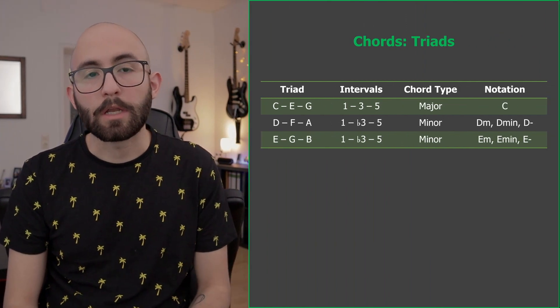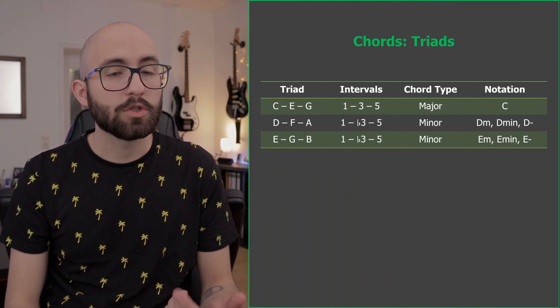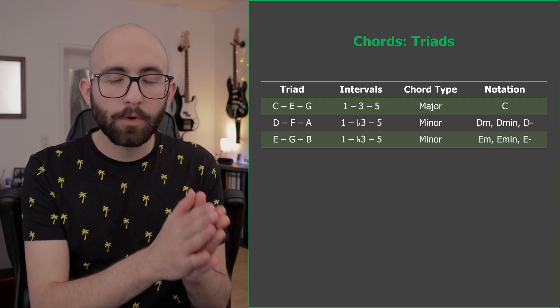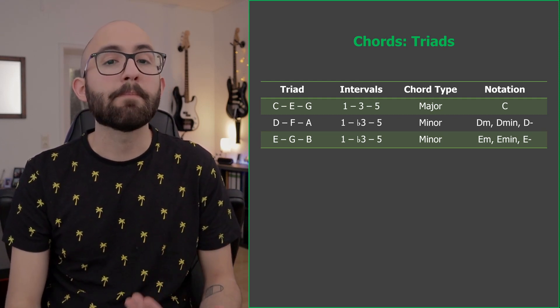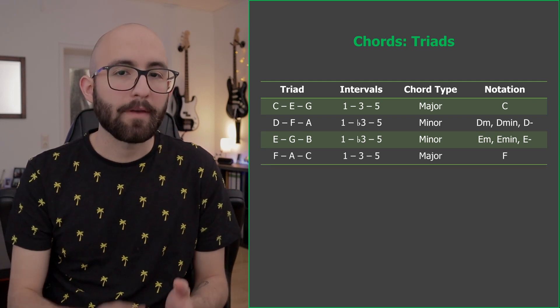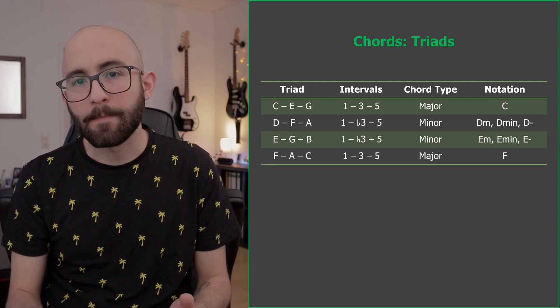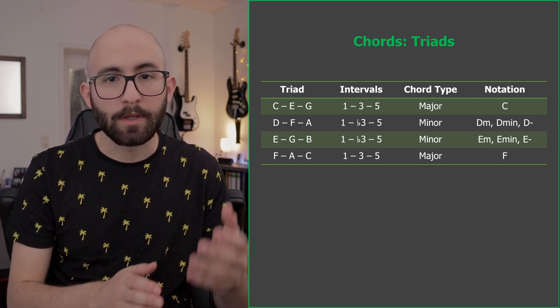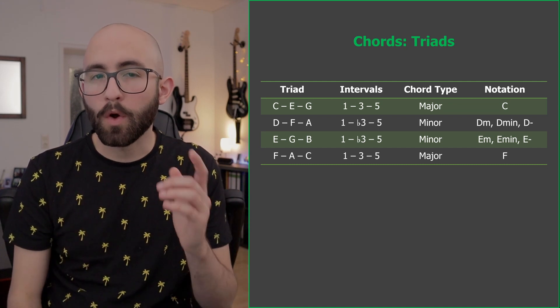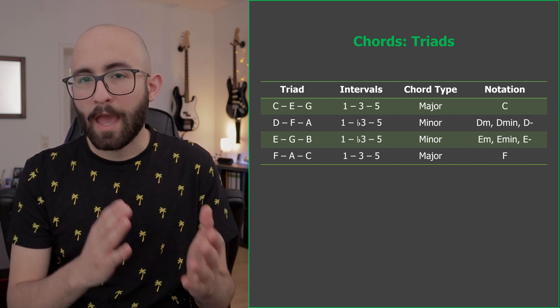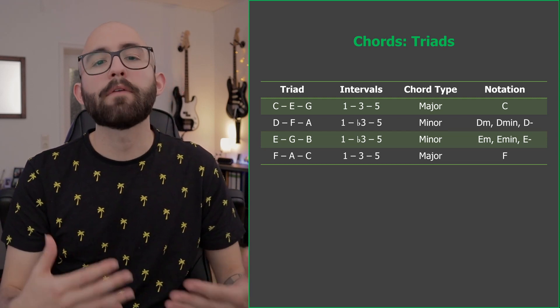If we continue building chords by stacking thirds, starting each time on a different note of the C major scale, we obtain the following results. Starting on E, we get E, G, and B — note the minor third between E and G, therefore we have an E minor chord. Starting on F, we have F, A, and C. We again have a major third between F and A, so we have a major chord.